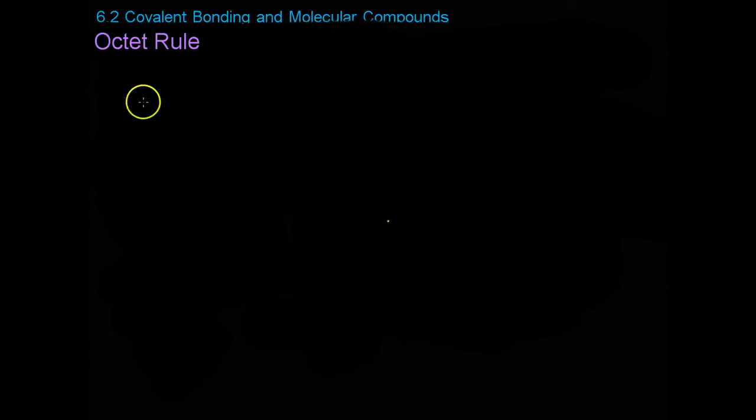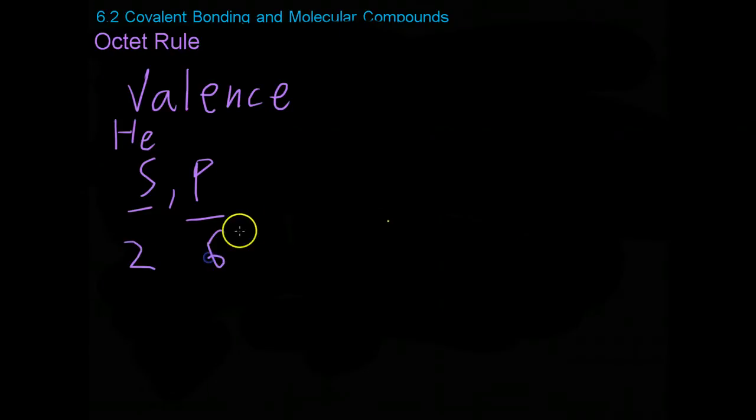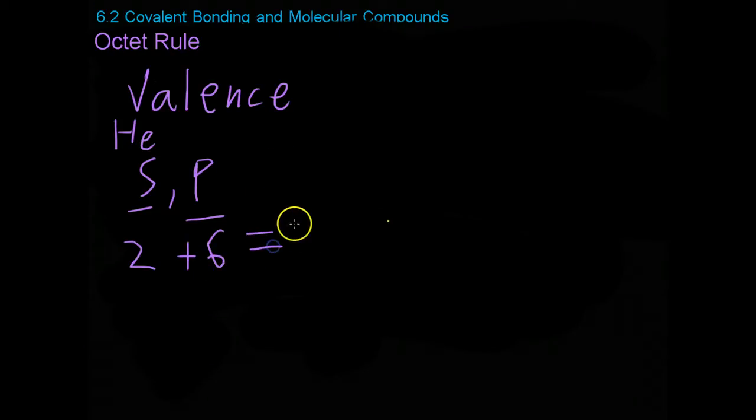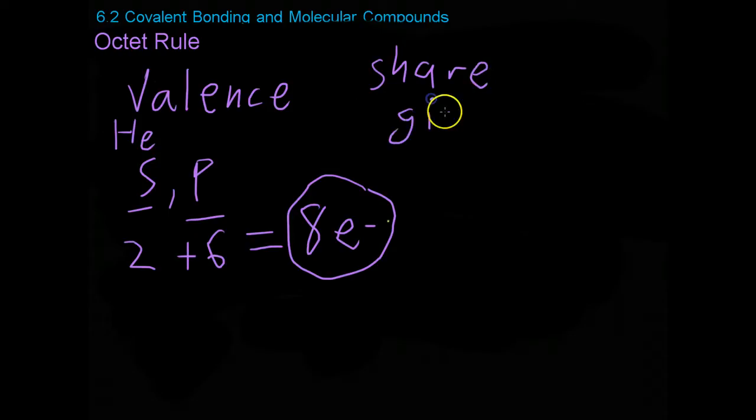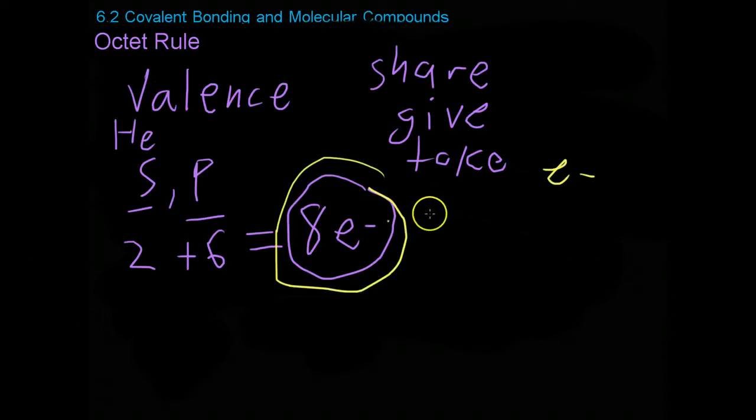The noble gases have this low potential energy because their outer orbitals, their valence electrons, have completely filled their s and p orbitals, or in the case of helium, just the s orbital. These full s and p orbitals, each of which can hold two and six electrons respectively, allow the noble gases to have eight valence electrons. Unfortunately for the rest of the periodic table, they do not come with eight valence electrons. However, they still want to get to this state because it is the lowest potential energy. So what they will do is either share, give, or take someone else's electrons in order to get to this eight electron configuration.